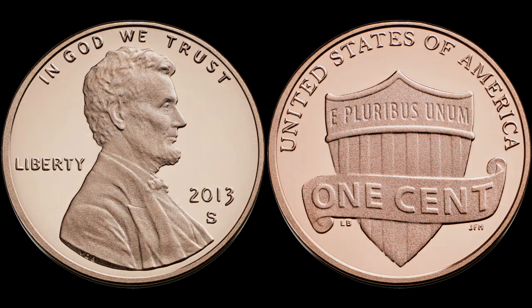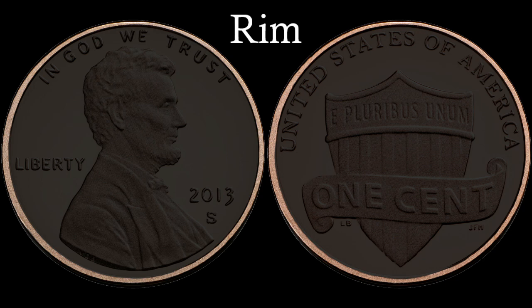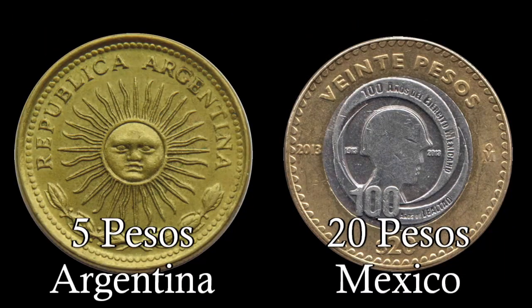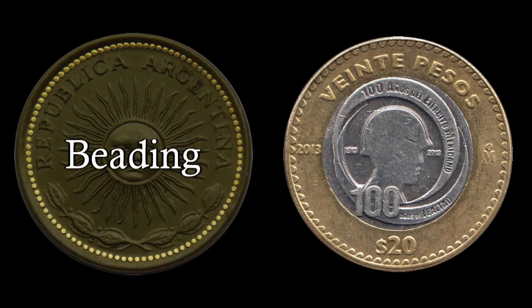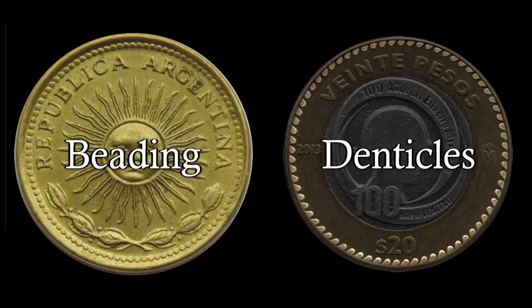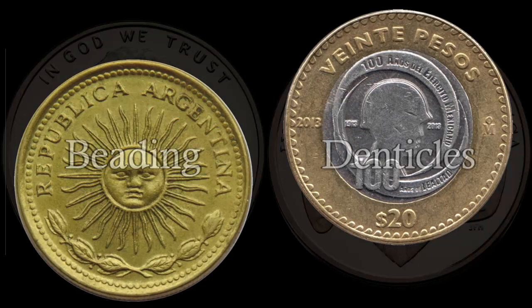Around the edge of the faces of the coin is its rim. It's slightly raised above the other design elements to slow the wearing away of the design and to allow for easier stacking. Just inside the rim, some coins have design elements known as beading or denticles. Beading is a series of dots just inside the rim of the coin. Denticles, which comes from the Latin word for tooth, are projections which extend from the rim of the coin.